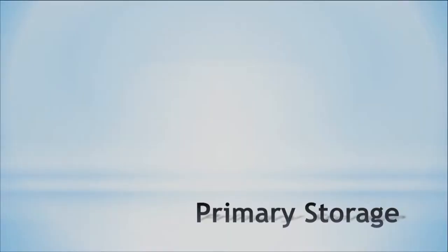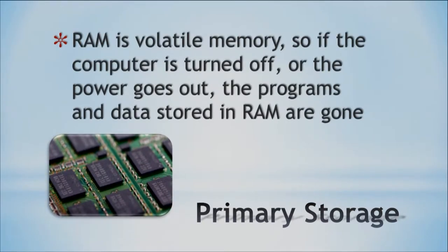So you have the CPU pulling from and putting data into the RAM. Now, primary storage is volatile. That basically means if you turn the computer off or the power goes out — programs and data stored in RAM are gone. They're not there anymore.